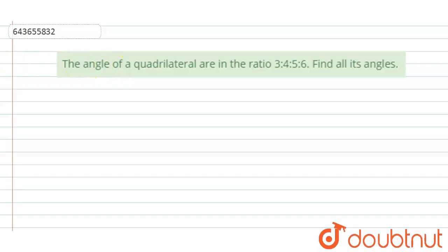Hi, welcome to this video. The question is: the angles of a quadrilateral are in the ratio 3:4:5:6. Find all its angles.